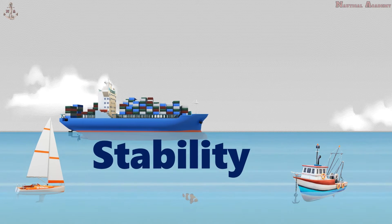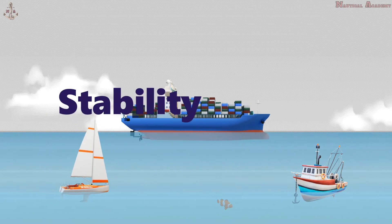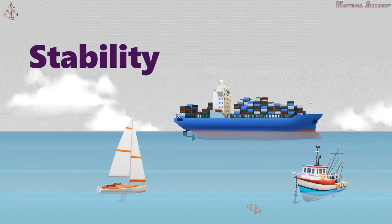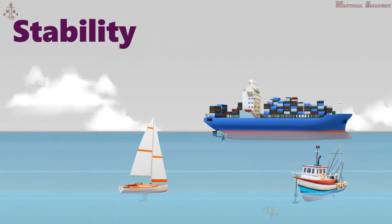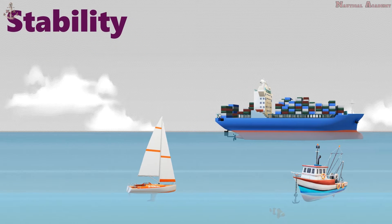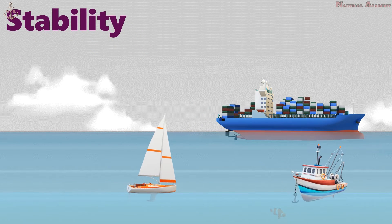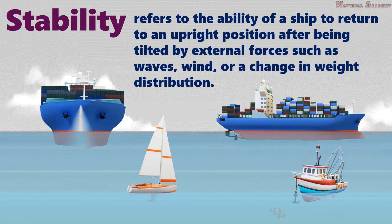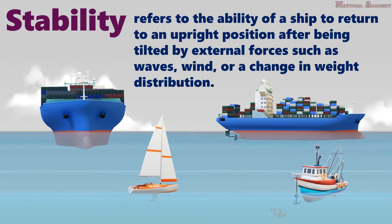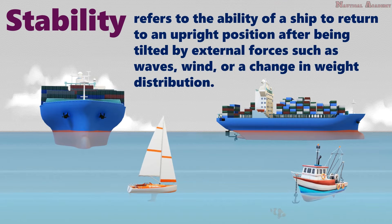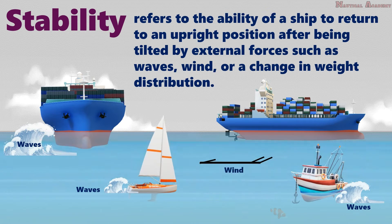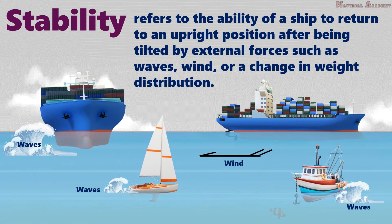We will explore the mechanics that govern how these giant ships stay afloat in the water. Ship stability refers to the ability of a ship to return to an upright position after being tilted by external forces such as waves, wind, or a change in weight distribution.